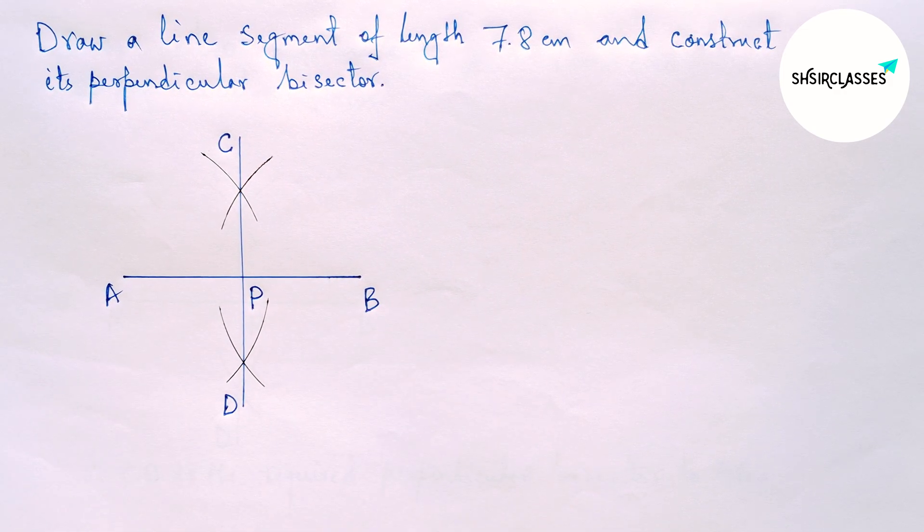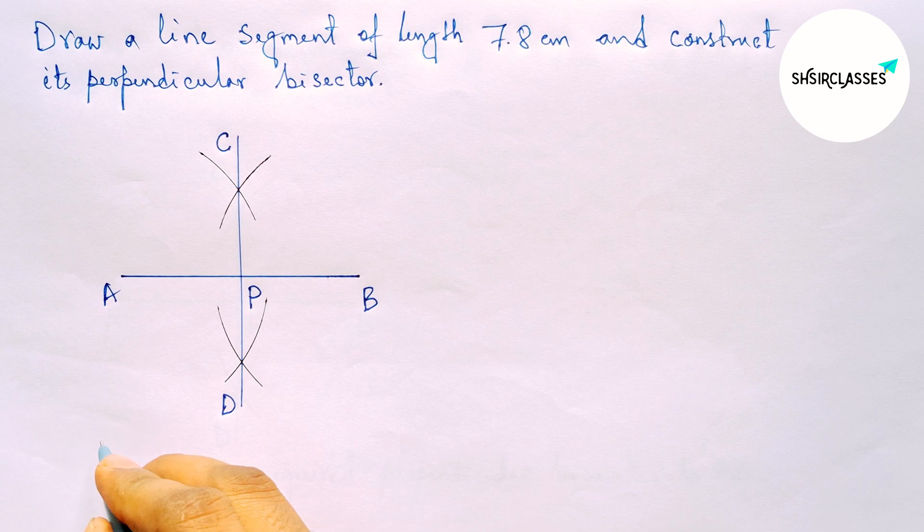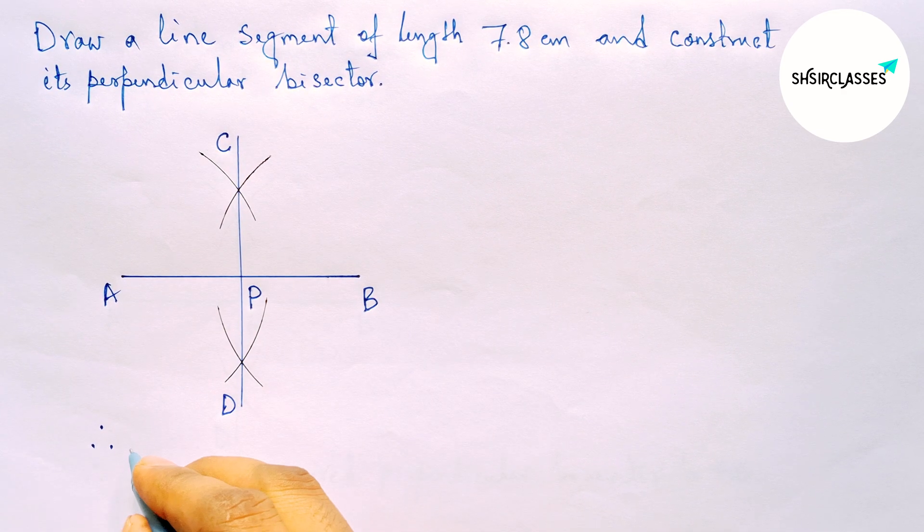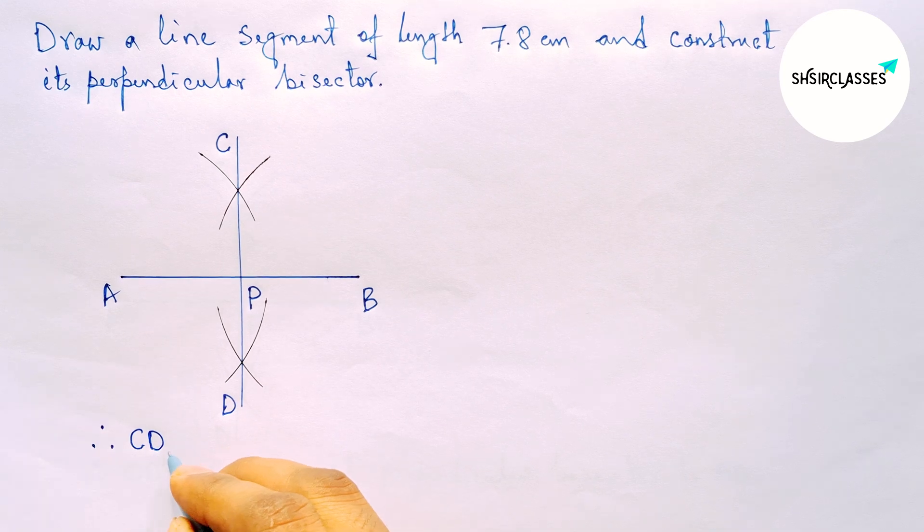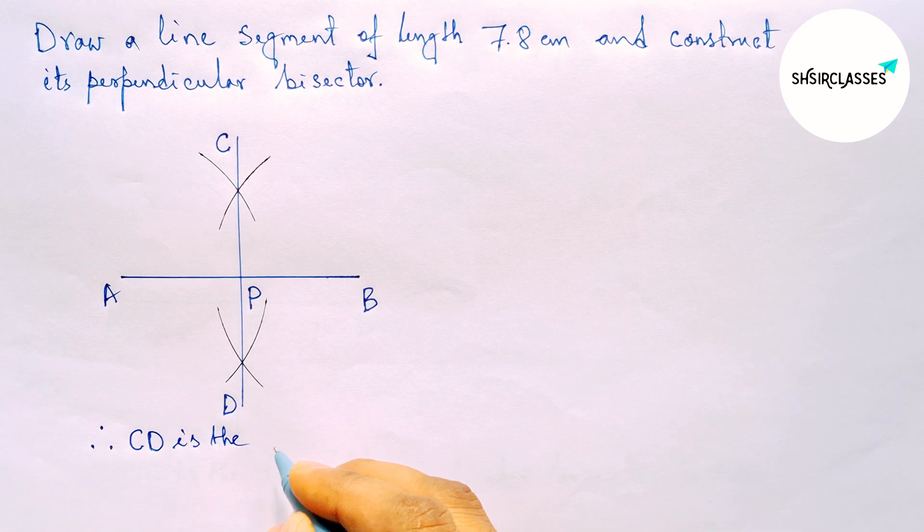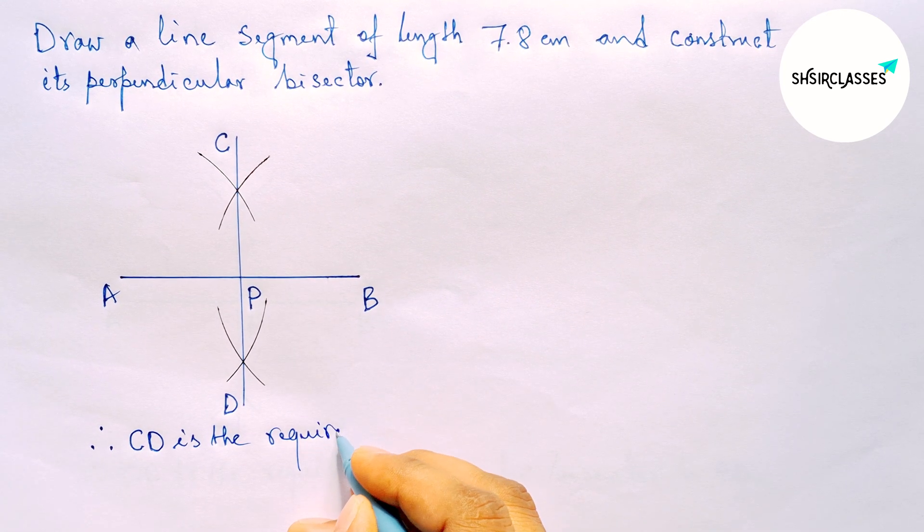Therefore CD is the required perpendicular bisector to the line AB equal to 7.8 centimeters.